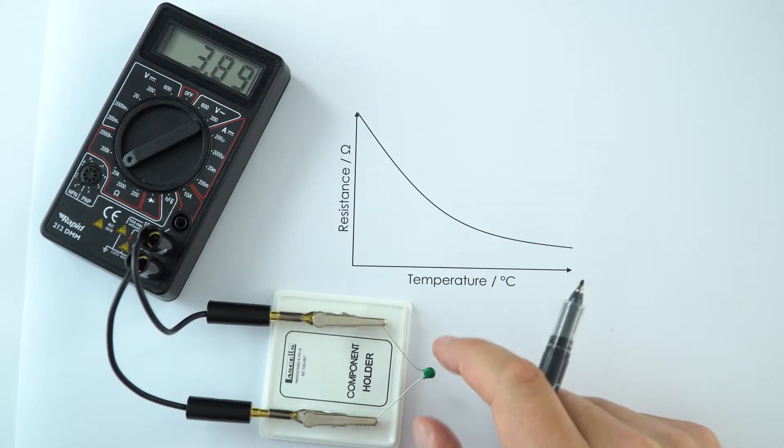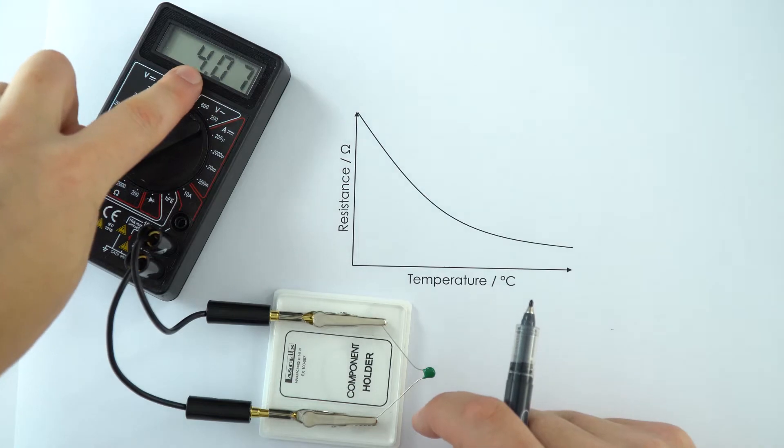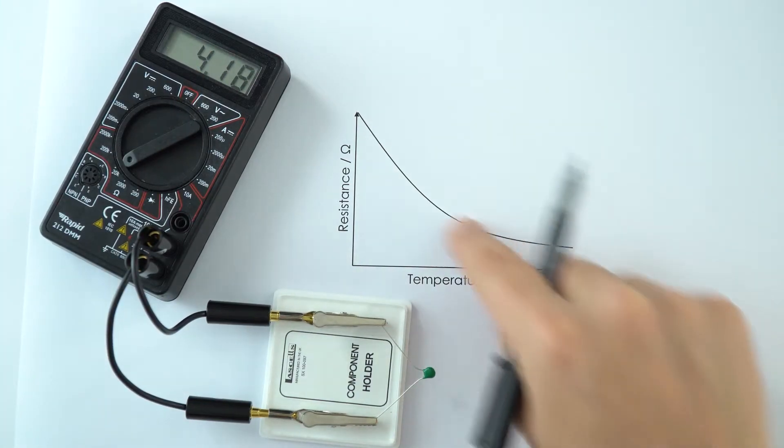And now I've taken my hand off it, we can see that as this is starting to cool down, the resistance is again increasing. And actually this is the shape of the graph that we get.